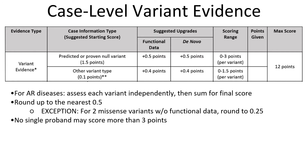When evaluating biallelic variants in the context of autosomal recessive disease, evaluate each observed variant in trans independently, then sum for the final score. Always round to the nearest 0.5, except when you have biallelic missense variants without supportive functional data — in this case, round to the final score of 0.25. Note that no single proband may score more than 3 points.